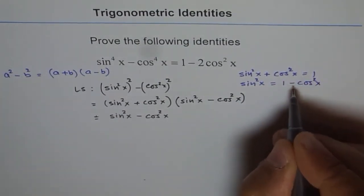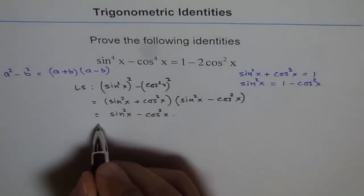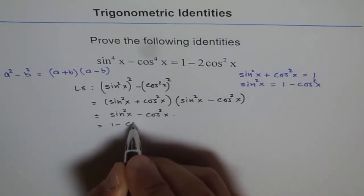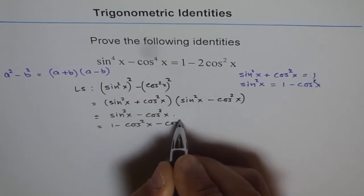So we will use this property. We will say sin^2x = 1 - cos^2x. And we already have -cos^2x here.